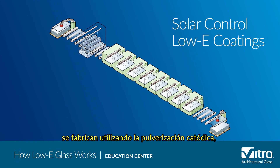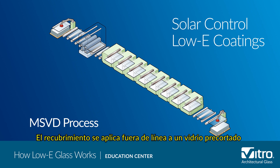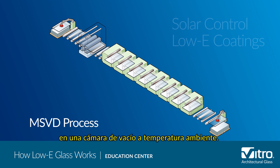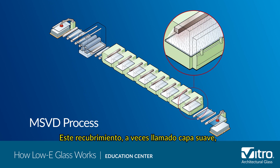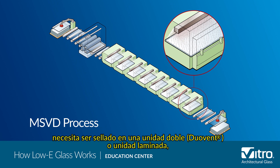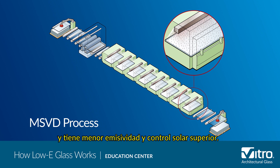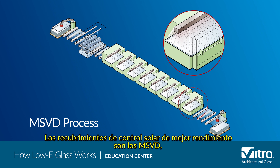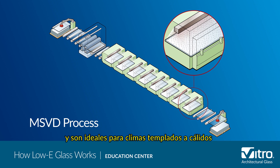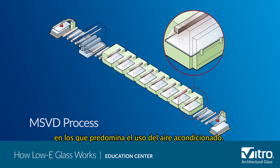Most solar low-e coatings are manufactured using the magnetron-sputtered vacuum deposition, or MSVD, process. The coating is applied offline to pre-cut glass in a vacuum chamber at room temperature. This coating, sometimes referred to as a soft coat, needs to be sealed in an insulated glass or laminated unit and has lower emissivity and superior solar control. The best performing solar control coatings are MSVD and they are ideal for mild to hot climates dominated by air conditioning use.